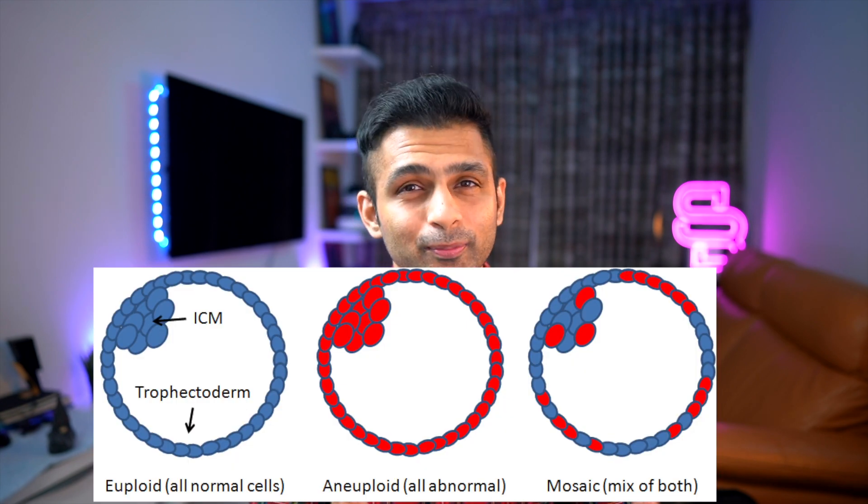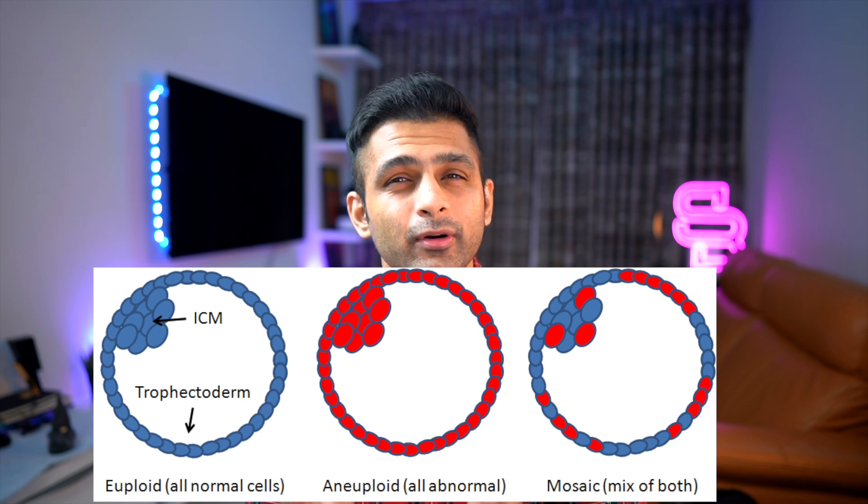Now let us consider the advantages and disadvantages of PGT testing and reason out why they should exist today. In my opinion, the first reason these tests should exist is because they can let us know the status of the embryo, especially the mosaic status. Mosaic embryos have both euploid and aneuploid cells within them and form around 10 to 20 percent of all embryos. If there are more aneuploid cells, they are called high-level mosaic embryos; if they have low levels, they are called low-level mosaic embryos. These mosaic embryos have a high chance of self-correcting and leading to very healthy babies.